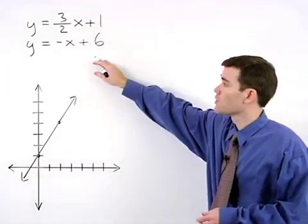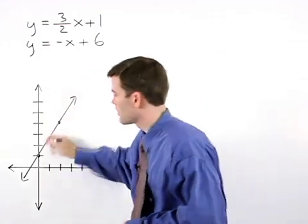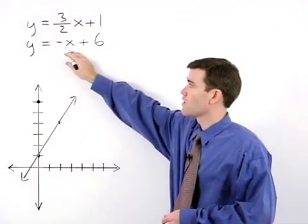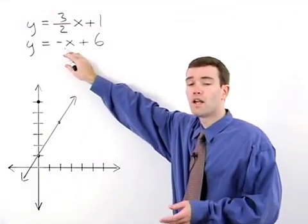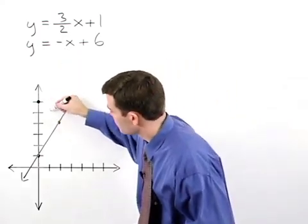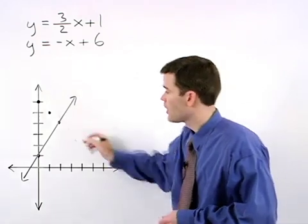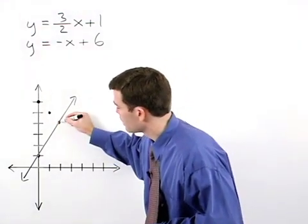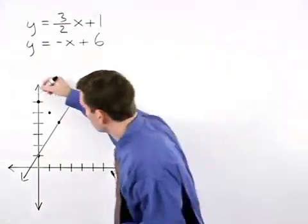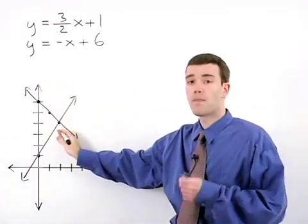For our second line, y equals negative x plus 6. It has a y intercept of 6, up 6 units on the y axis, and its slope can be thought of as negative 1, or negative 1 over 1. So from our y intercept, we go down 1 and to the right 1 to plot a second point. Notice that if we go down 1 and to the right 1 again, we reach our point of intersection. So if we graph our second line, you can see that the two lines intersect at this point.